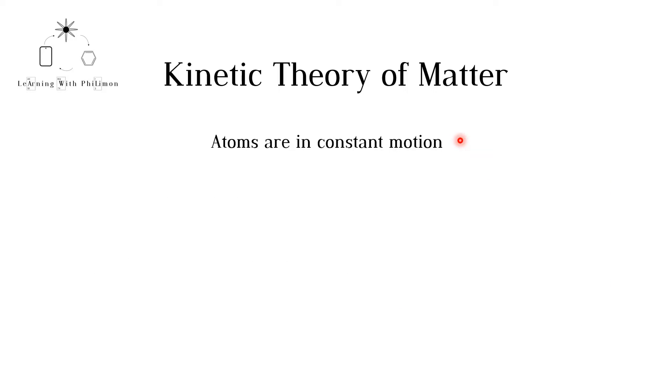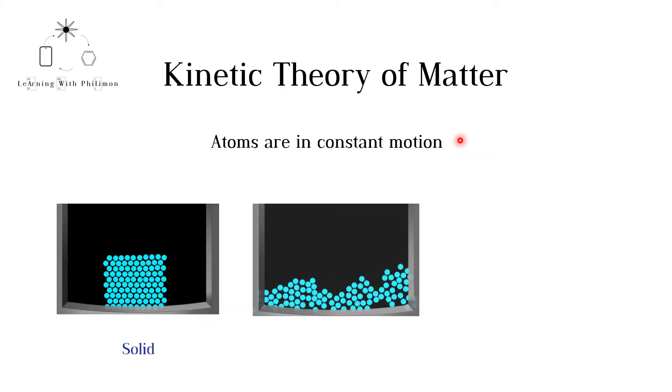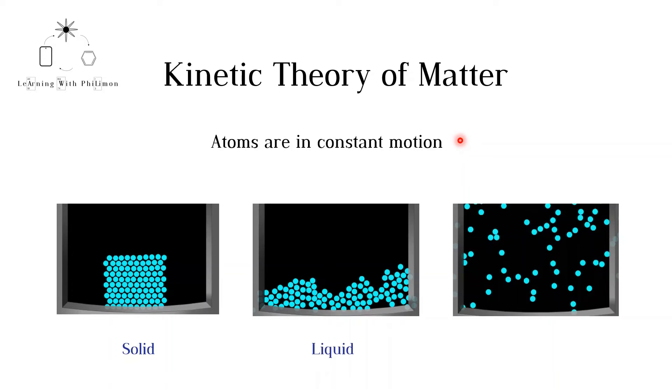The second point in the kinetic theory of matter is that atoms are in constant motion. We will also describe the three states of matter: solid, liquid, and gas. To help us visualize this, we will use a simulation from the PhET website by the University of Boulder, Colorado, which I highly recommend.